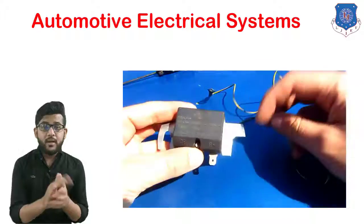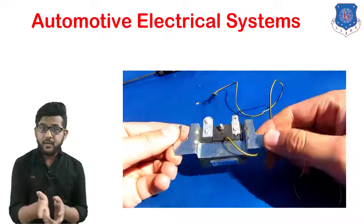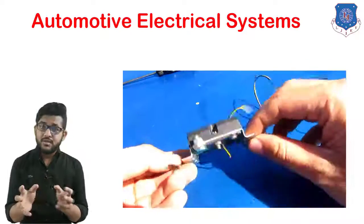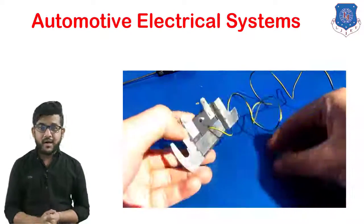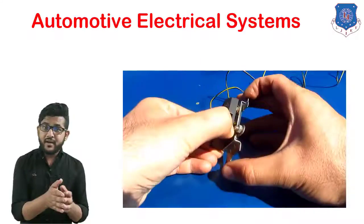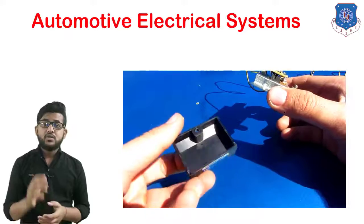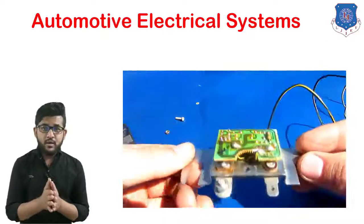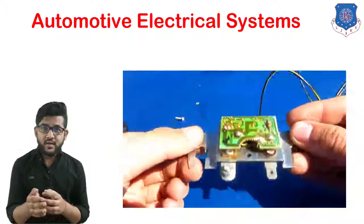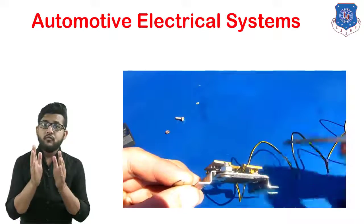There is also a regulator fitted on an automobile which regulates the current produced by the generator. Without a regulator, the current produced by the generator would be so much that it could damage the battery and other electrical units. High current is permitted to flow by the regulator when the battery is in discharge condition or when the vehicle's electrical units are turned on. It also helps in reducing the current from the generator when the battery is in a charged condition and when the electrical units are switched off.